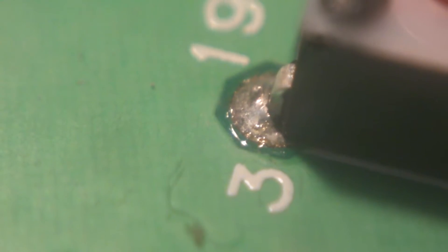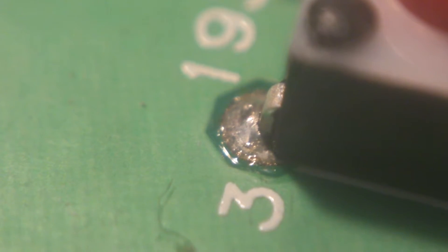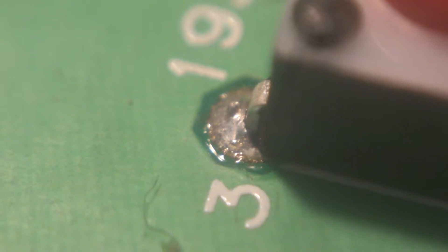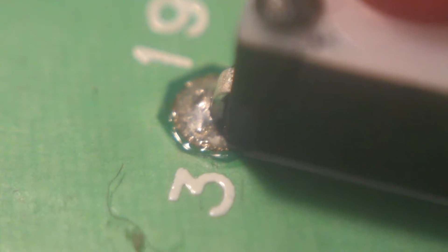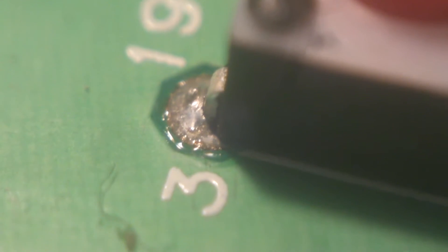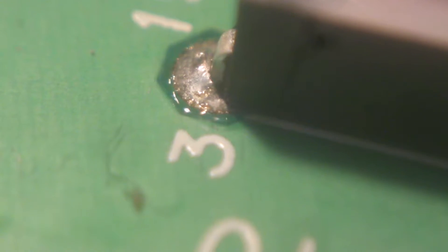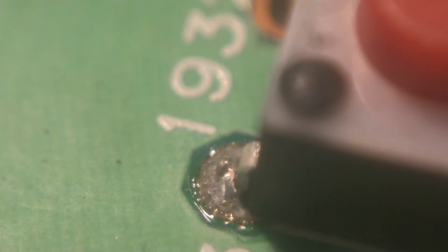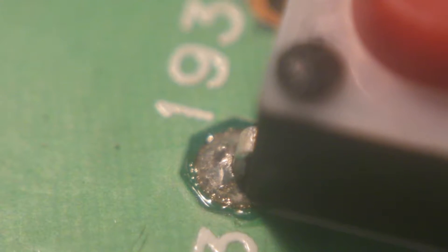You can see on the other side how the solder's gone all the way through, and that's preferable because, well, for a little button it doesn't really matter, but in high current applications, you kind of want solder all the way through so that you don't have the via, or the plated through hole, taking all the current. You want the solder to take all the current and everything.